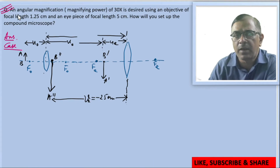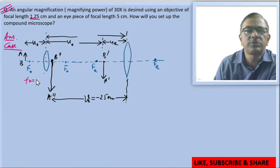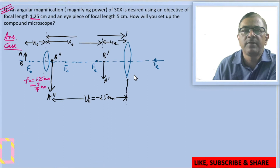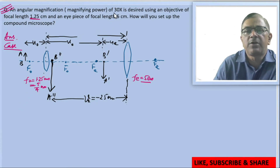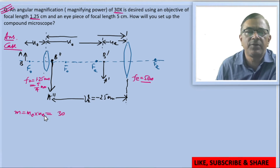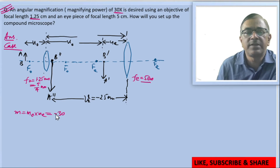According to the problem, the focal length of the objective lens is fo equals 1.25 centimeter, which can also be written as 5/4 centimeter. The focal length of the eyepiece is fe equals 5 centimeter. The magnification produced by the compound microscope is 30, meaning m equals mo into me equals 30. Since the final image is real with respect to the object, we write this as minus 30.